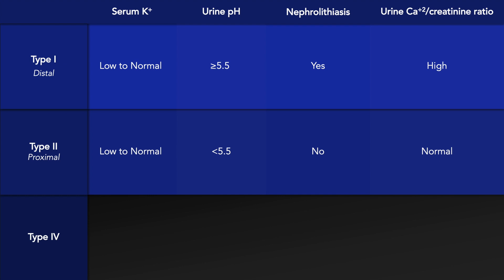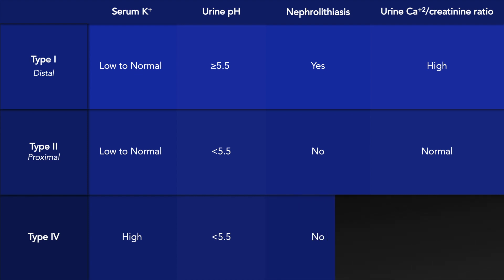And lastly, we will discuss type 4 renal tubular acidosis. In this type of RTA, the serum potassium level is typically high. The urine pH is lower than 5.5. As in type 2 RTA, nephrolithiasis is not a common complication, and the urine calcium-creatinine ratio is normal.